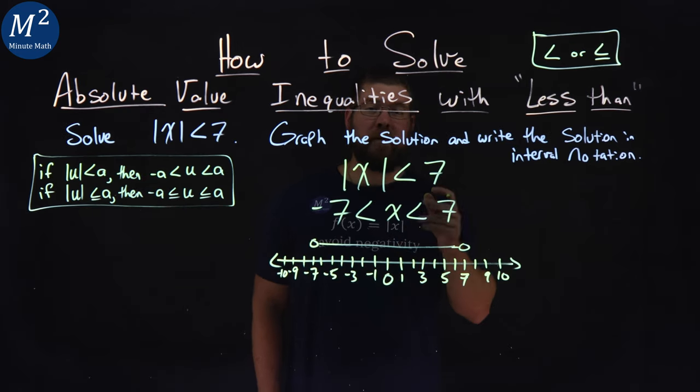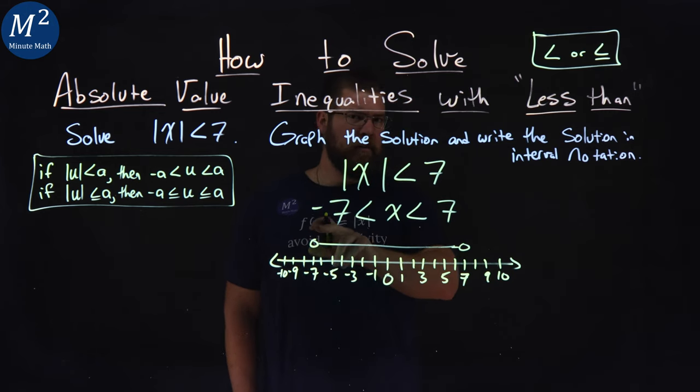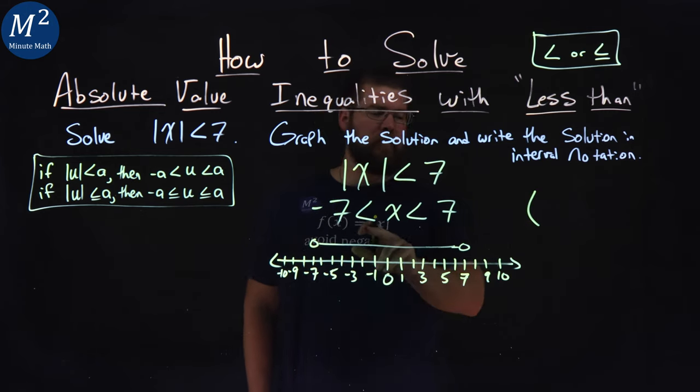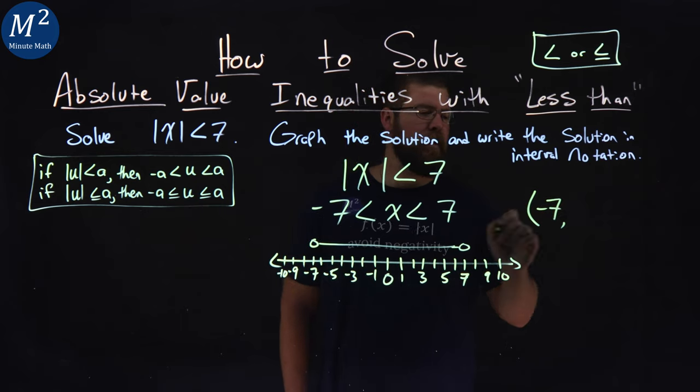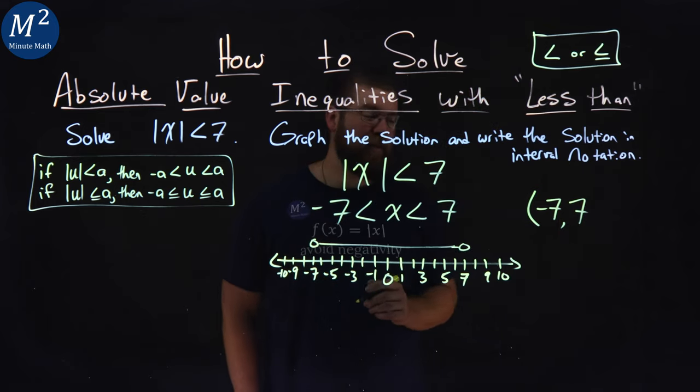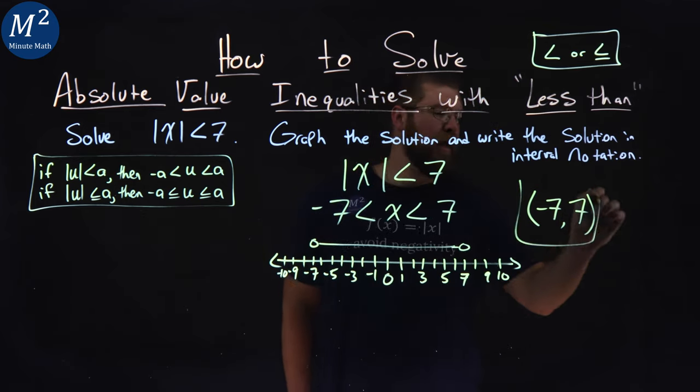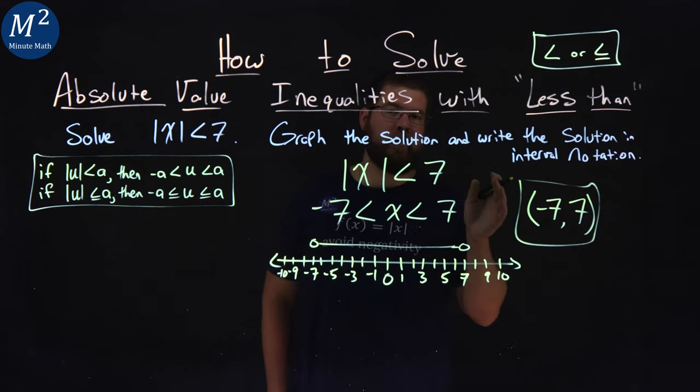So now we need to write this in interval notation as well. We start with negative 7, our lowest value here, and we're not equal to it, so you put a parenthesis. Then we go all the way through the values up to positive 7. But again, we don't equal positive 7, so another parenthesis. And there we have it. We have our answer here in interval notation.